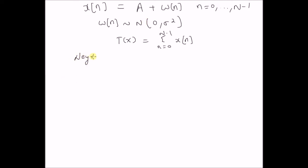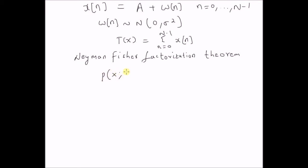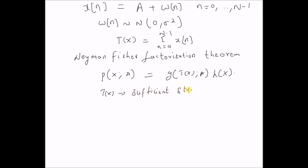Based on the Neyman-Fisher factorization theorem, if the PDF of the observations p(x; a) can be written as a product of two functions — where the first one is g(T(x); a) multiplied by another function h(x) — then T(x) is a sufficient statistic. Note that g(T(x); a) should be a function of the statistic T(x) and the parameter a, while h(x) should be a function only of the observations x.